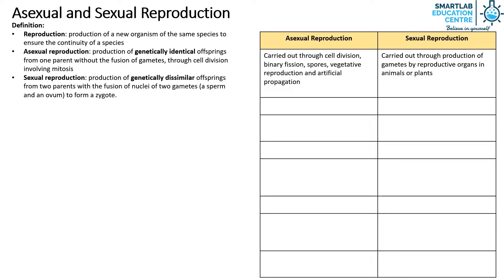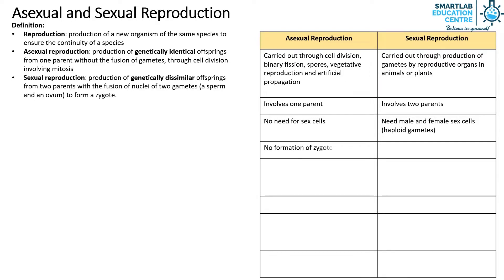Asexual reproduction involves one parent, whereas sexual reproduction involves two parents. There is no need for sex cells in asexual reproduction, but in sexual reproduction there is a need for male and female sex cells, each being a haploid gamete. There is no formation of zygote in asexual reproduction, but a zygote is formed during fertilization in sexual reproduction.